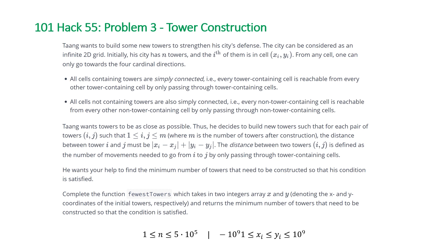And also all cells not containing towers are also simply connected — every non-tower-containing cell is reachable from every other non-tower-containing cell by only passing through non-tower-containing cells. Tang wants towers to be as close as possible.